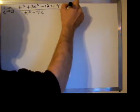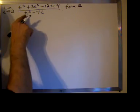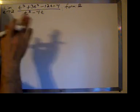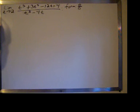So our form is 0. And then on the bottom is easier. 2 cubed is 8 minus 4 times 2 is 8. So we have 8 minus 8 is 0. So we have the form 0 over 0.